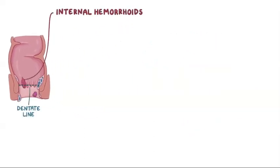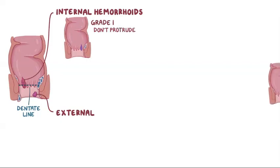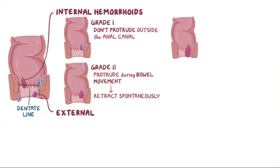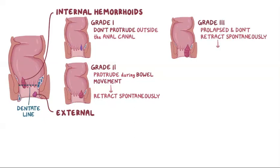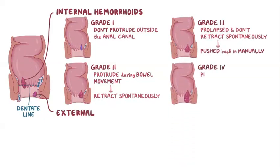Internal hemorrhoids are ones above the dentate line, and external hemorrhoids are ones below the dentate line. Internal hemorrhoids are subclassified into four grades based on the degree of prolapse from the anal canal. Grade 1 hemorrhoids don't protrude outside the anal canal. Grade 2 protrude outside the anus during bowel movement but retract spontaneously. Grade 3 are prolapsed hemorrhoids that don't retract spontaneously but can be pushed back in manually. Finally, grade 4 hemorrhoids are prolapsed and cannot be manually pushed back in.